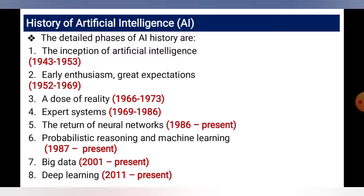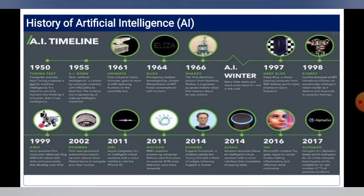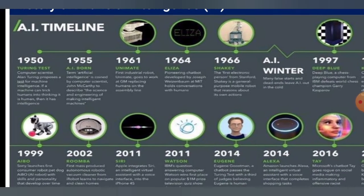Probabilistic reasoning and machine learning from 1987 to the present; big data from 2001 to the present; and deep learning from 2011 to the present. Everyone seems to be talking about artificial intelligence these days, but it is good to remember that AI is not something new. Post World War II, a variety of fields began to discuss the possibility of creating an artificial brain.